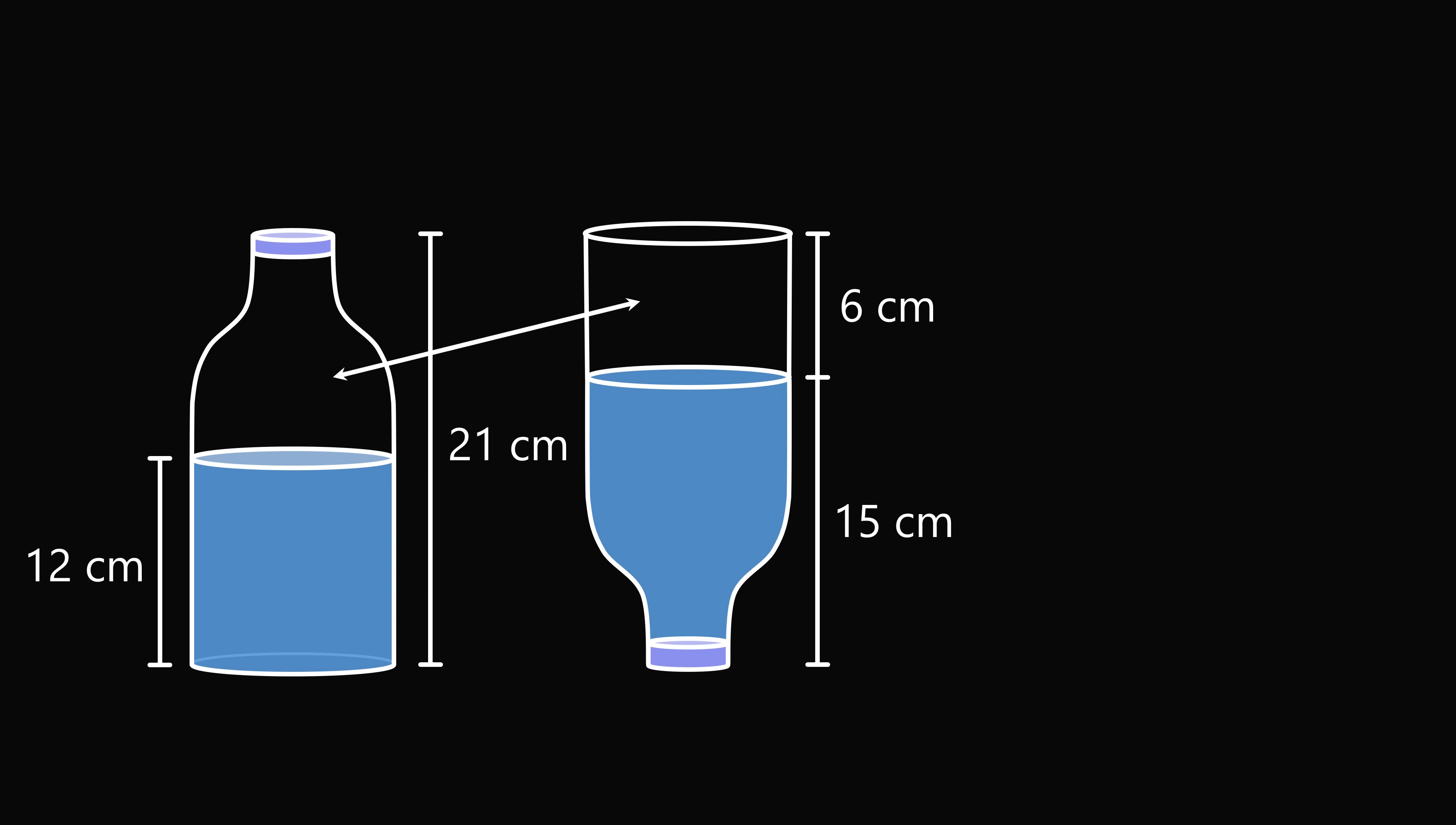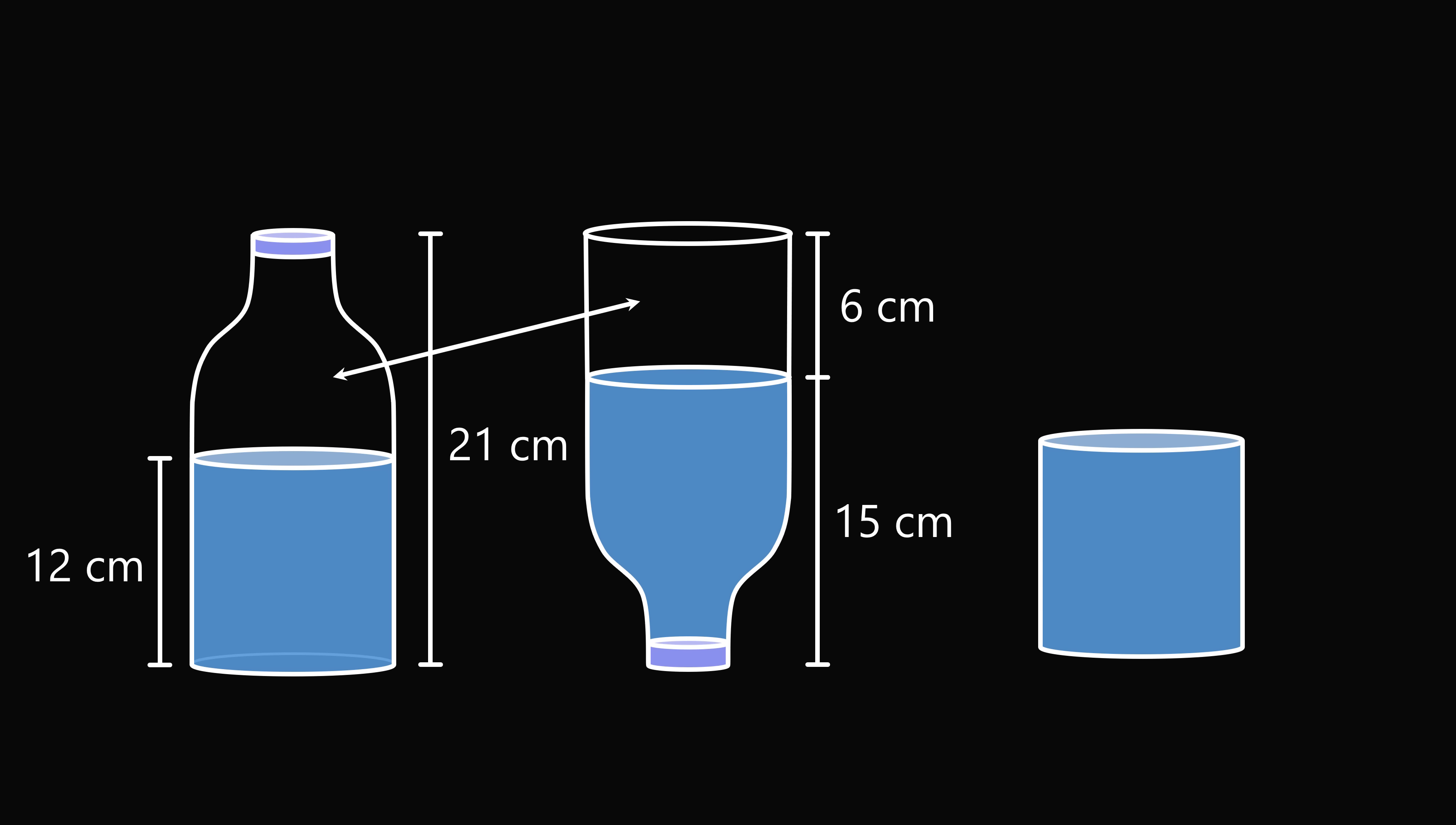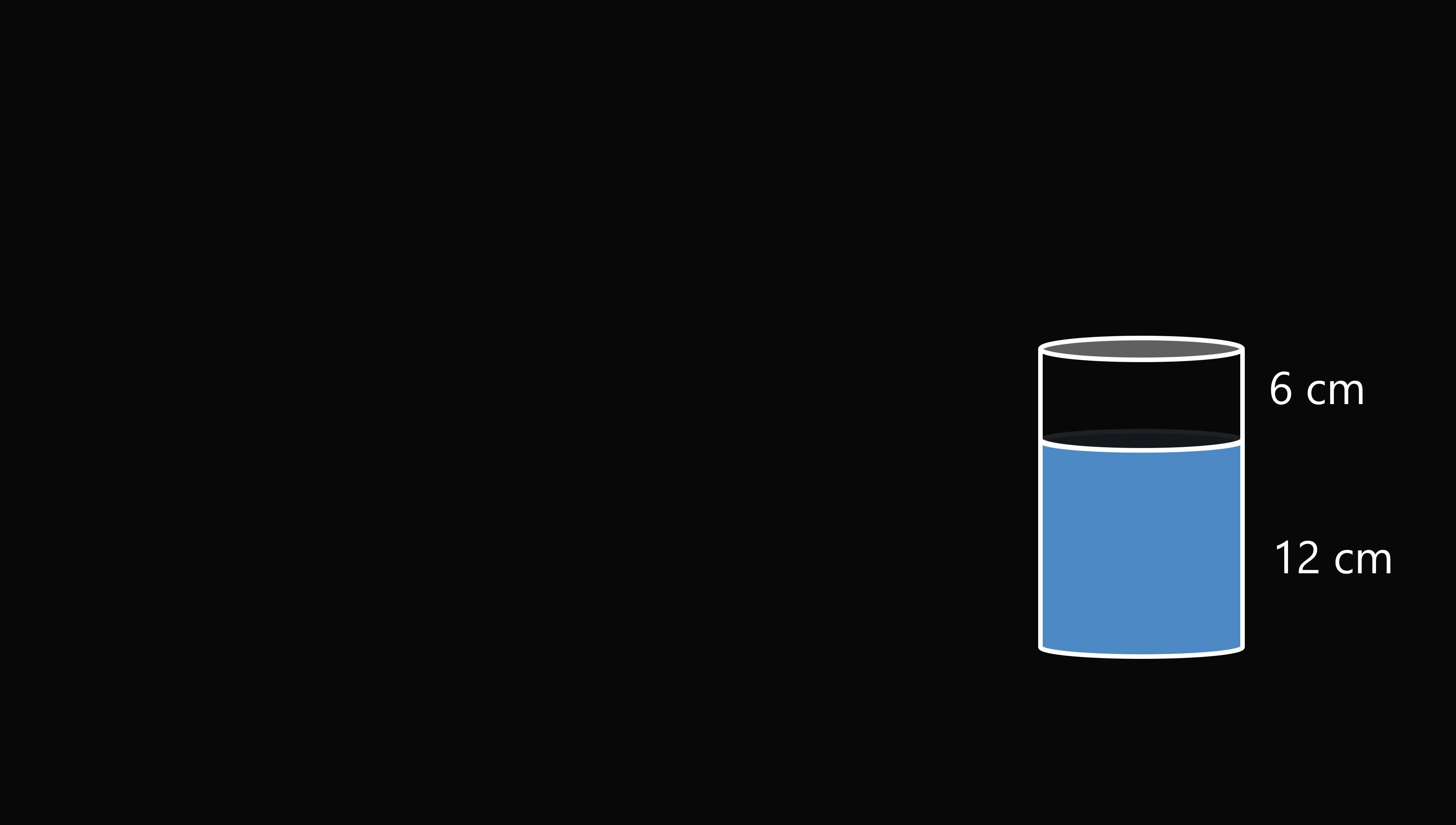So now we can imagine a bottle that's just cylindrical. We know that it would measure 12 centimeters of just water, and we would have 6 centimeters of air. So from here, we can figure out the fraction of the bottle that is water. The total height of this bottle will be 12 plus 6, which is equal to 18.